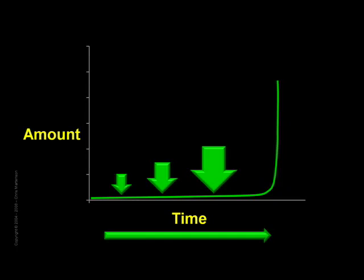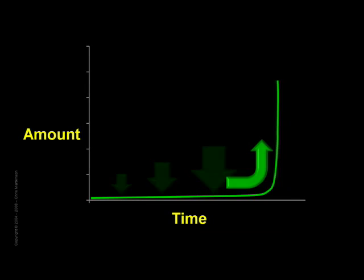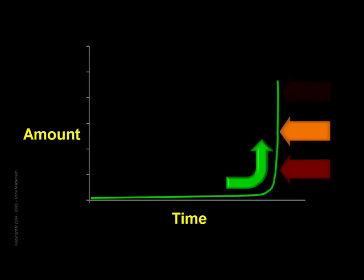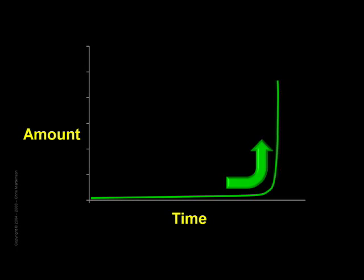Another thing I want you to take away from this chart is that once an exponential function turns the corner, even though the percentage rate of growth might remain constant and possibly quite low, the amounts do not. They pile up faster and faster. In this particular case, you are looking at a chart of something that historically grew at less than 1% per year.